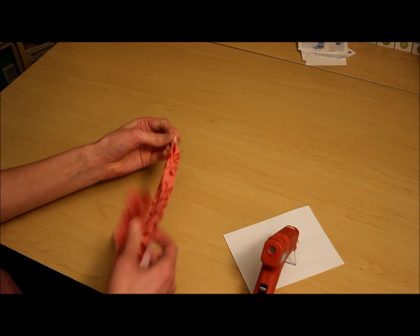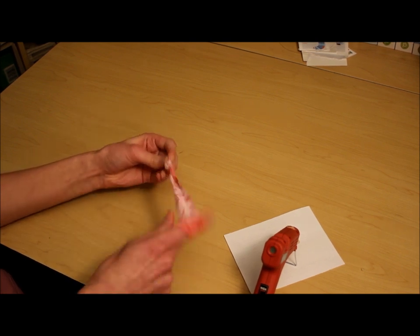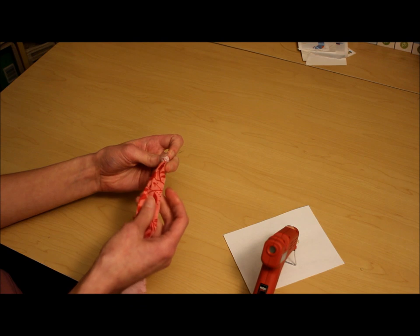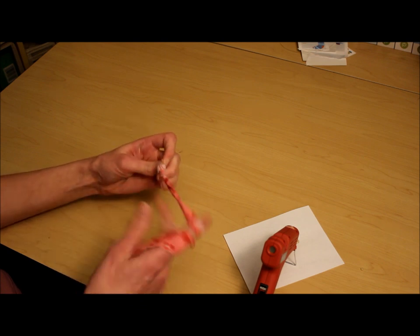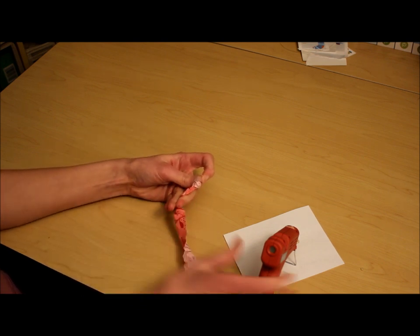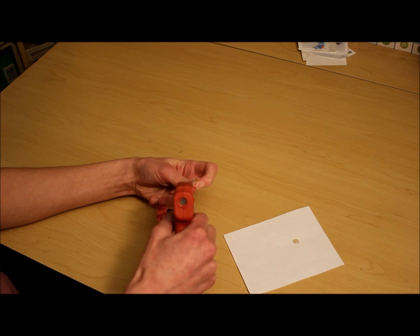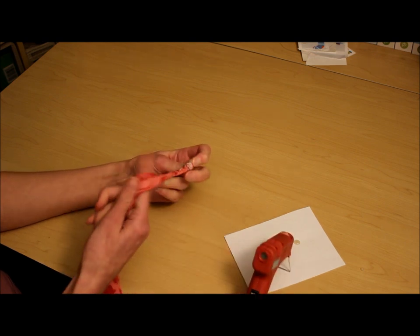From there, take the long tail of fabric and twist it. Make sure that the right side of the fabric is showing. You're just going to glue with a hot glue gun and wrap the fabric around.